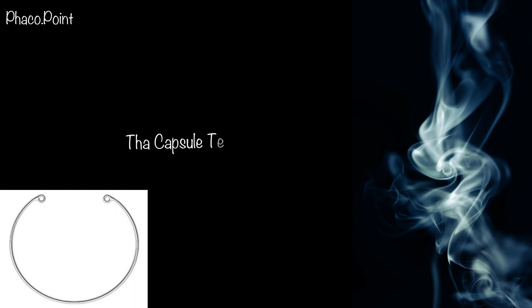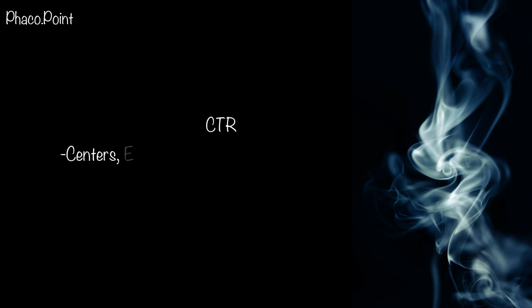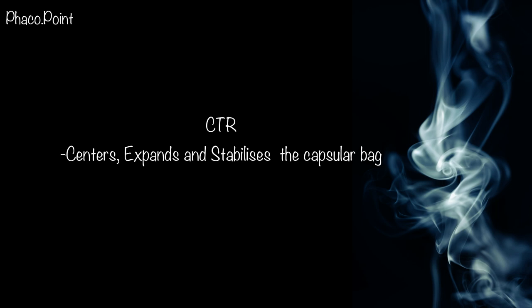A capsule tension ring is an incomplete circular ring made out of PMMA. Both ends have an eyelet which increases the safety and ease of introducing the ring into the capsular bag. When introduced within the capsular bag, the CTR does an excellent job of centering, expanding, and stabilising the capsular bag, thereby facilitating safe and successful phacoemulsification surgery. This ring exerts an outward force that redistributes tension from the intact zonules to strengthen the areas of weak or missing zonules.